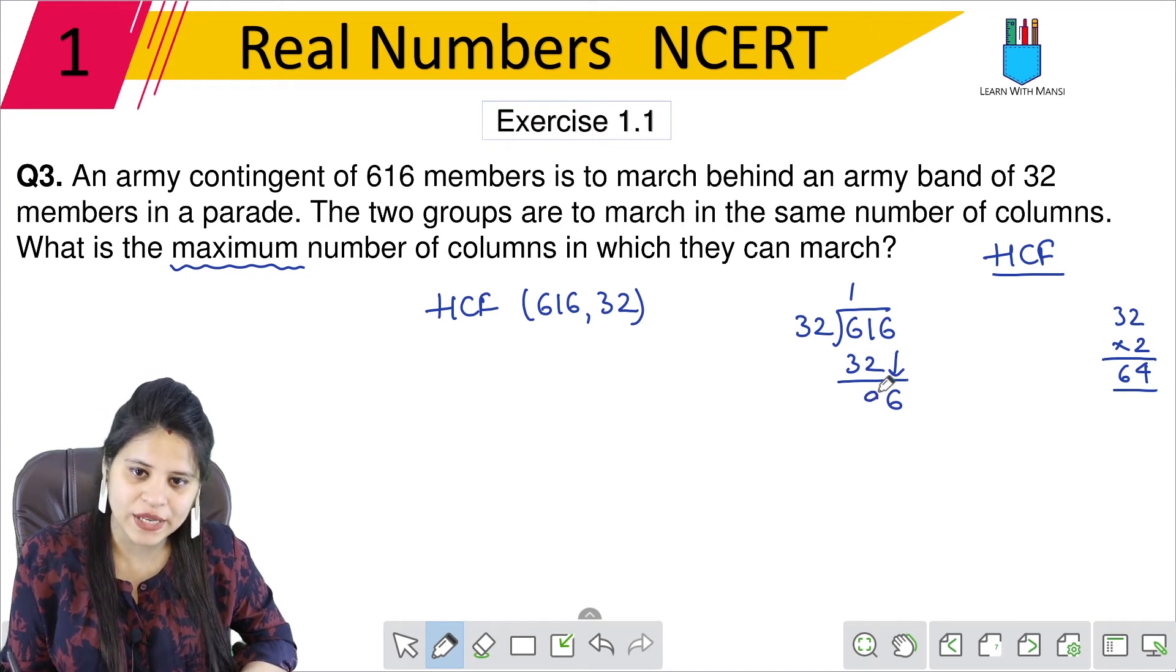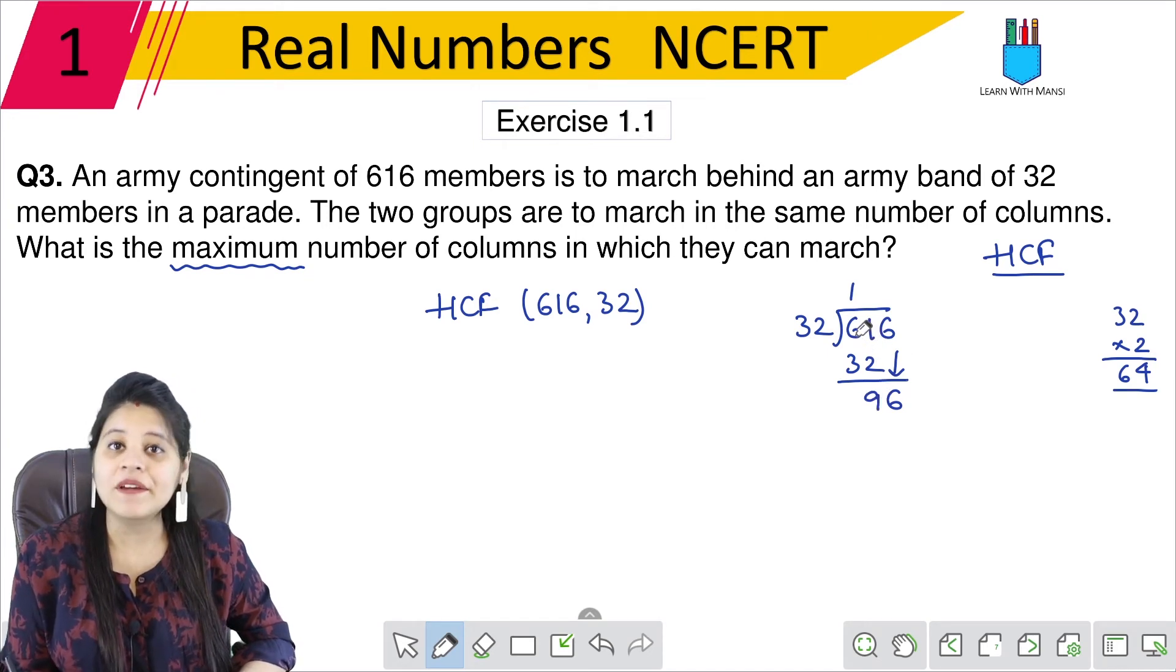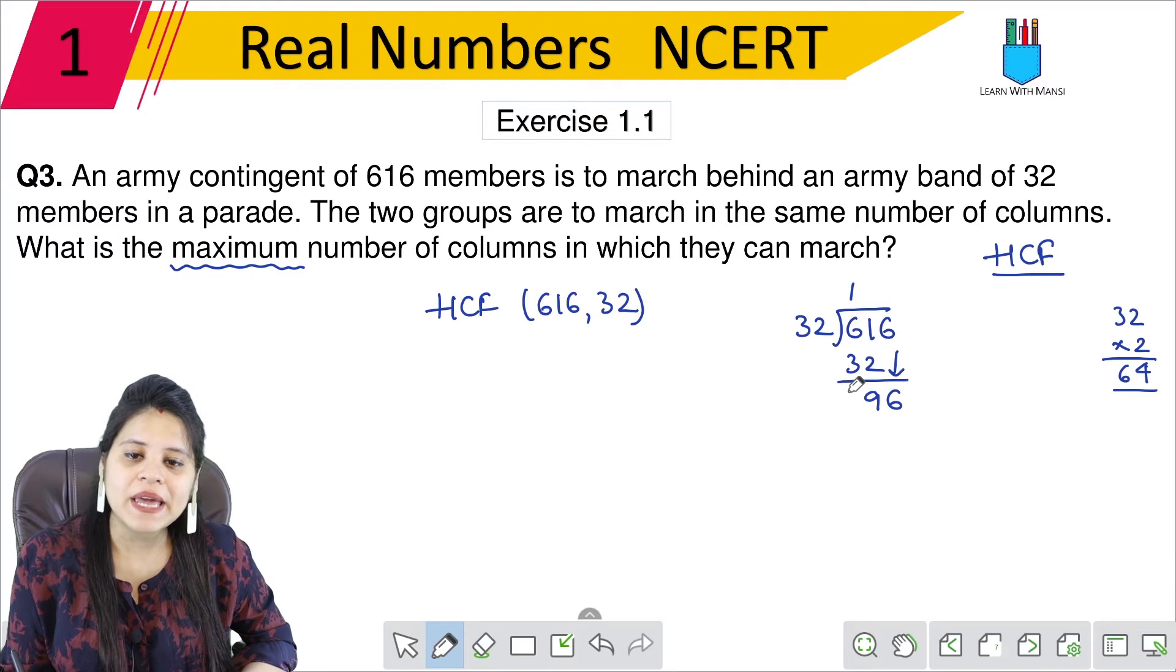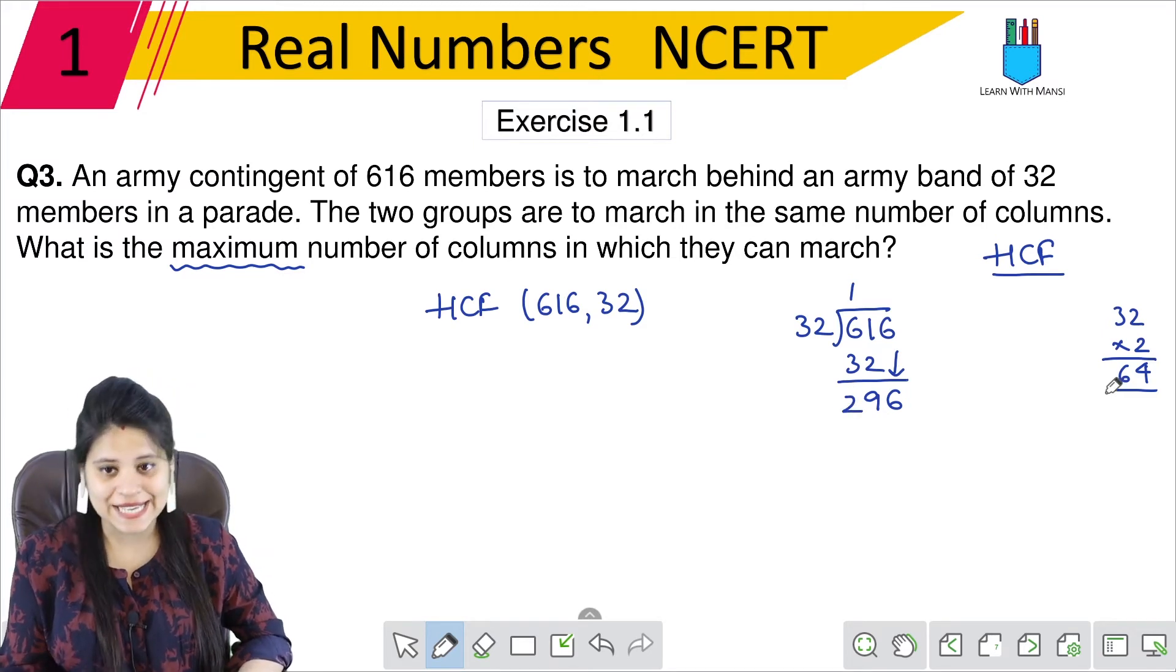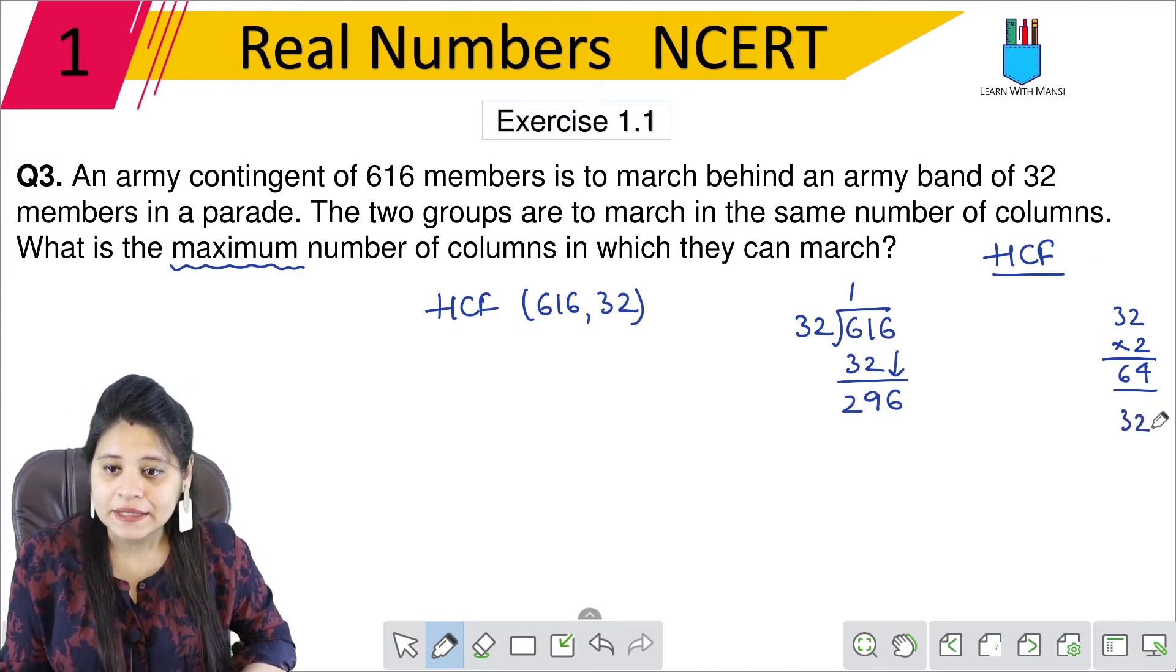So here we have 9. Again, here we have 5. We have 3 minus 2. So 2 is 296. Now, let's see how it will come.